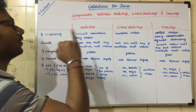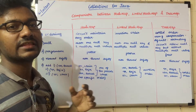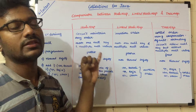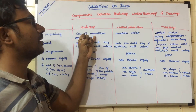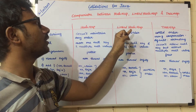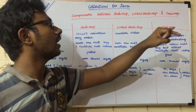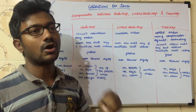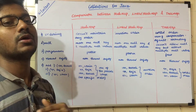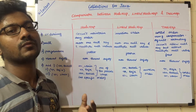First, ordering. HashMap does not maintain order. If you want to maintain order, LinkedHashMap will maintain the insertion order. If TreeMap is used, the default is sorted order — default is ascending order. If you want, you can also do custom sorting.